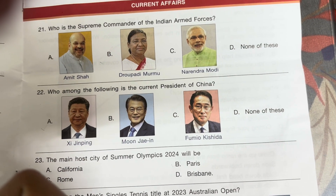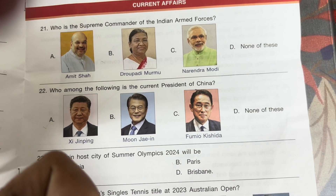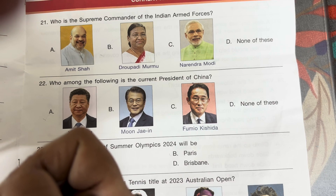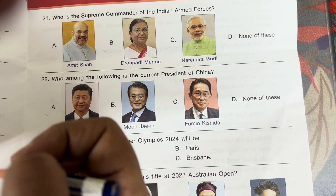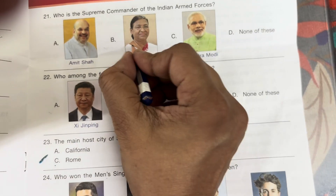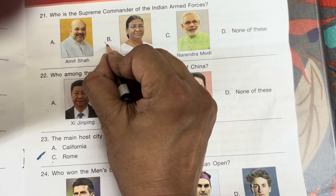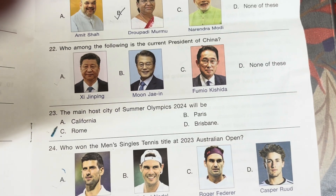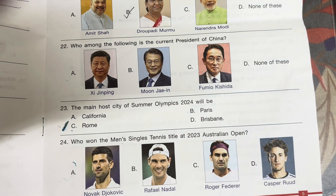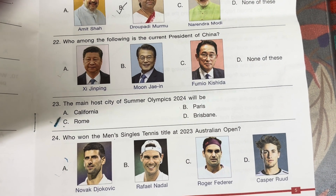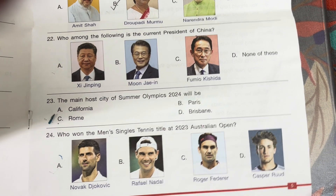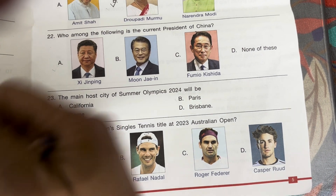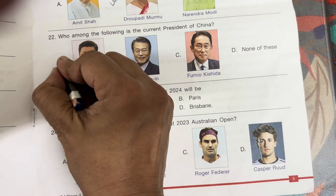Question 21: Who is the supreme commander of the Indian armed forces? Answer is Draupadi Murmu, our president. Question 22: Who is the current president of China? Answer is A — Xi Jinping.